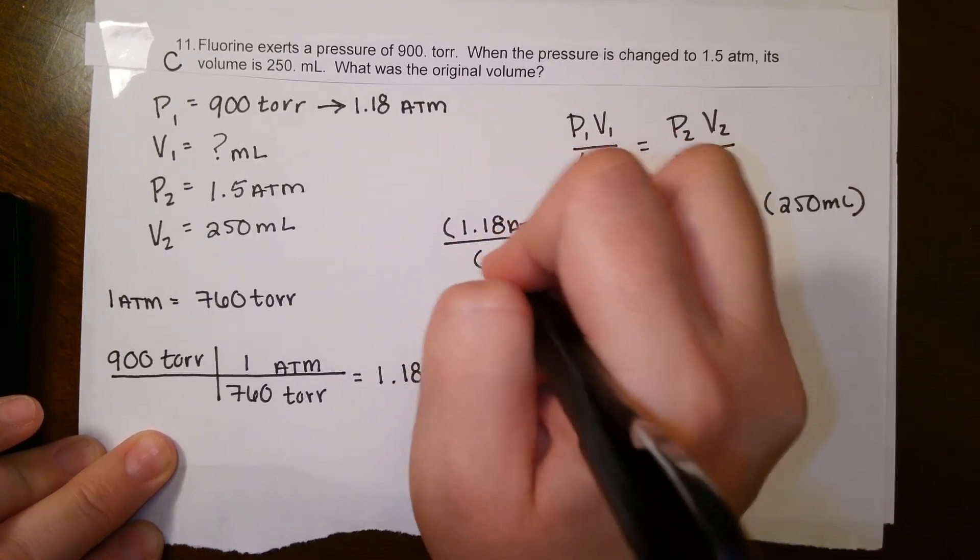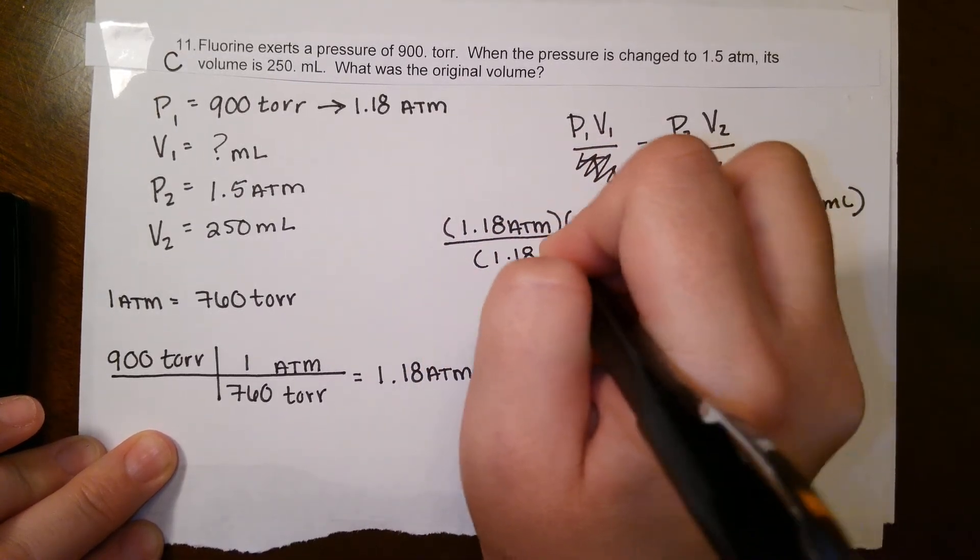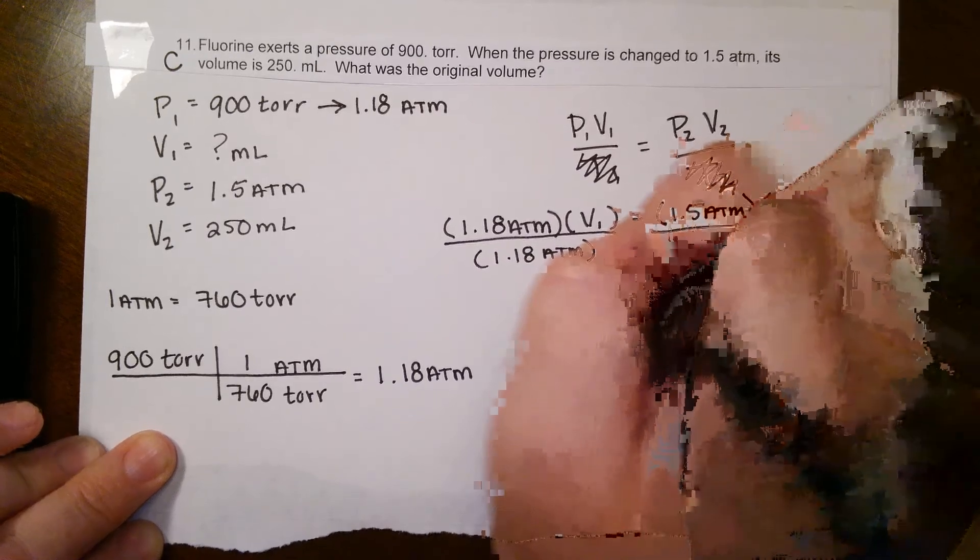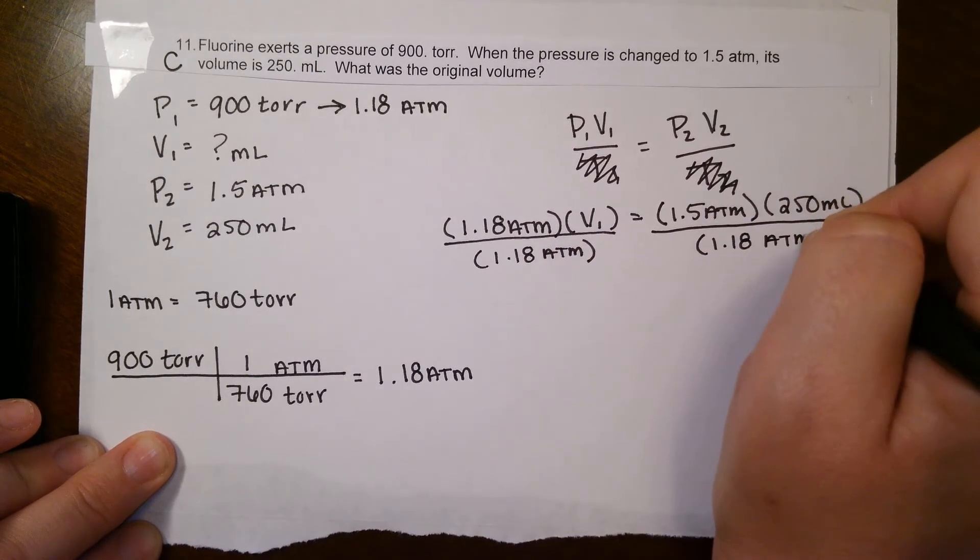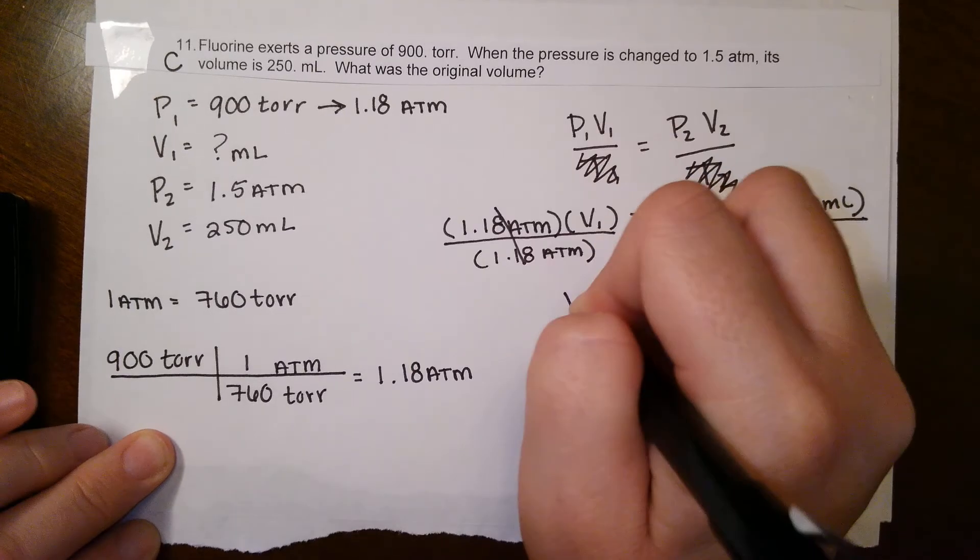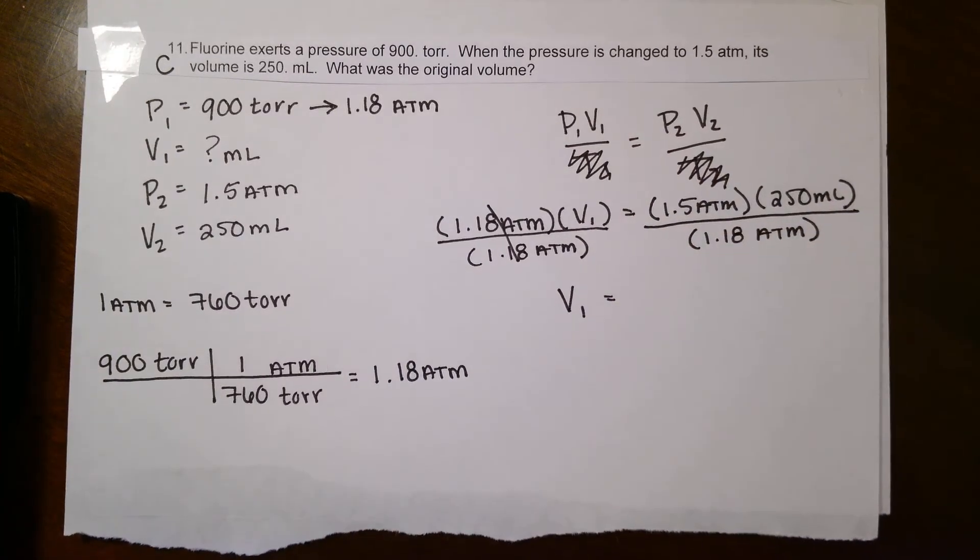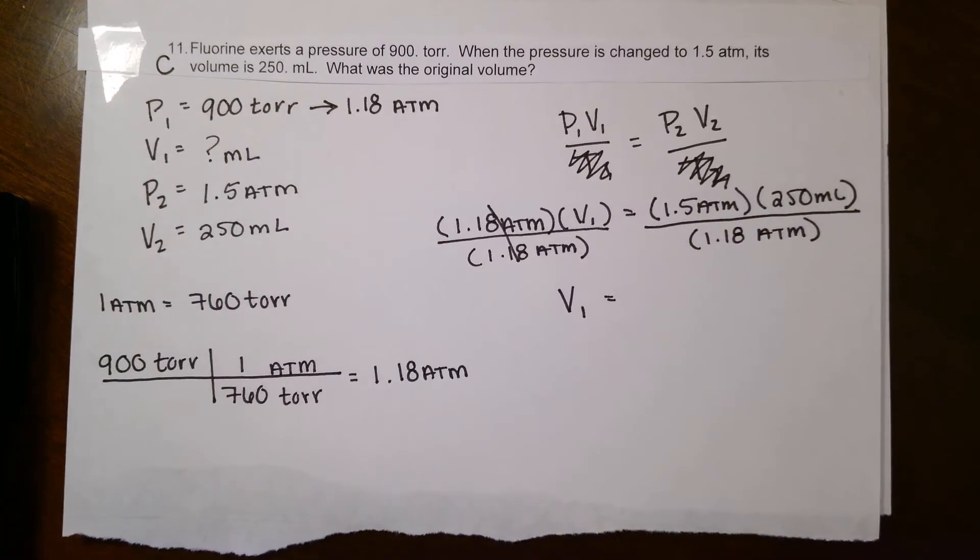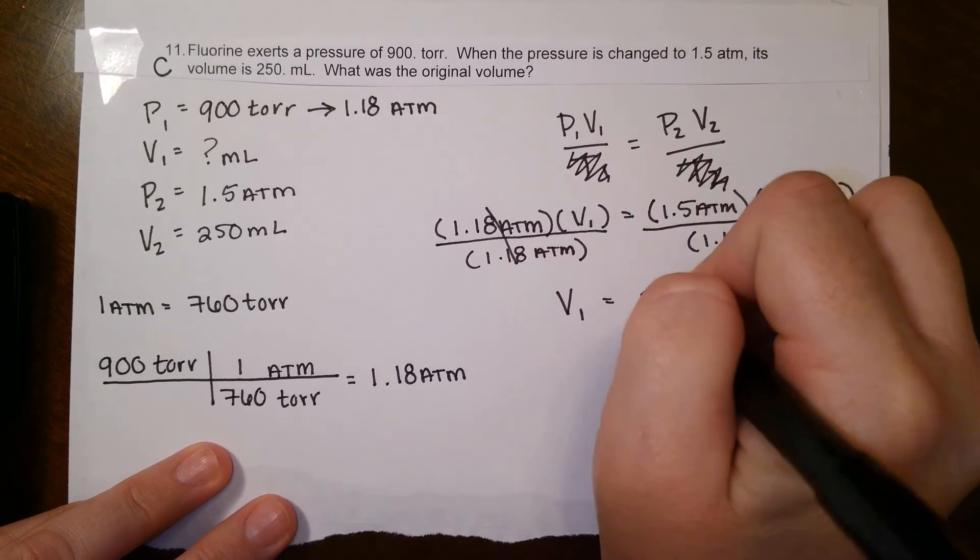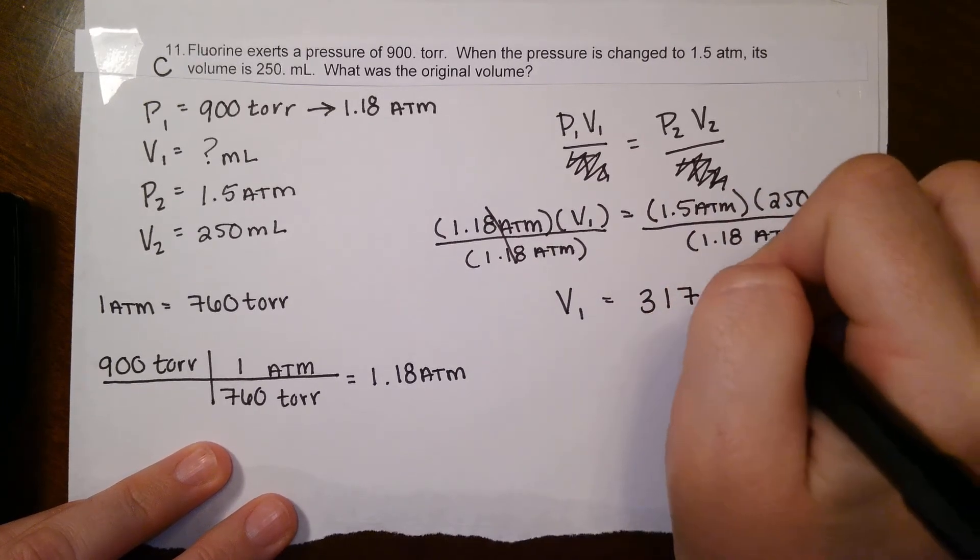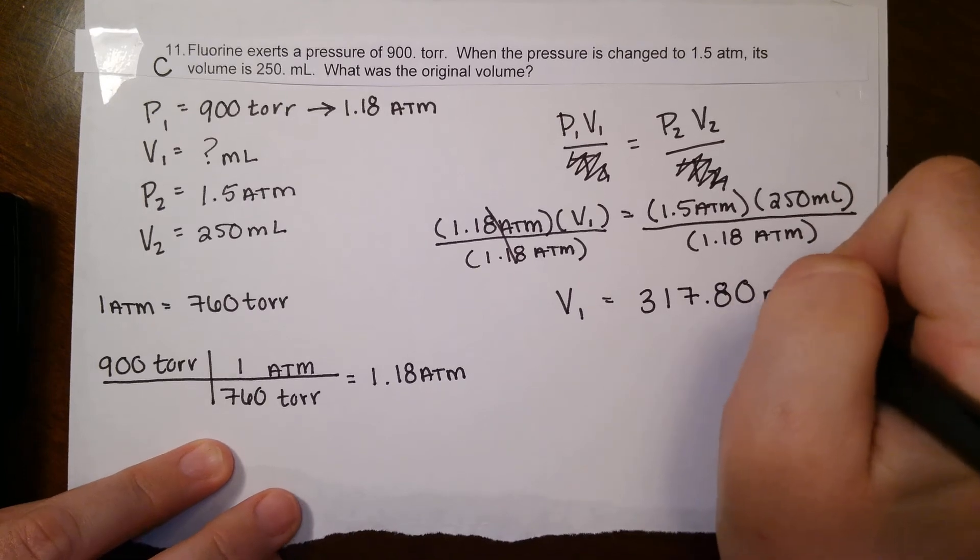We're going to divide by 1.18 atm. Make sure you do it to both sides, so we're going to do 1.18 atm to that other side. It cancels, so we get V1. We'll say 1.5 times 250, that's the top, divided by 1.18 the bottom. We get that the volume is 317.80 milliliters.